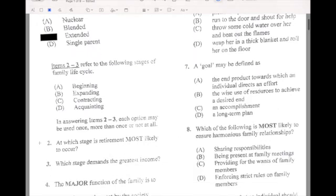In answering item two to three, each option may be used once, more than once or not at all. At what stage is retirement most likely to occur? Contracting stage. So we're going to put C there. For which stage demands the greatest income? That would be expanding.